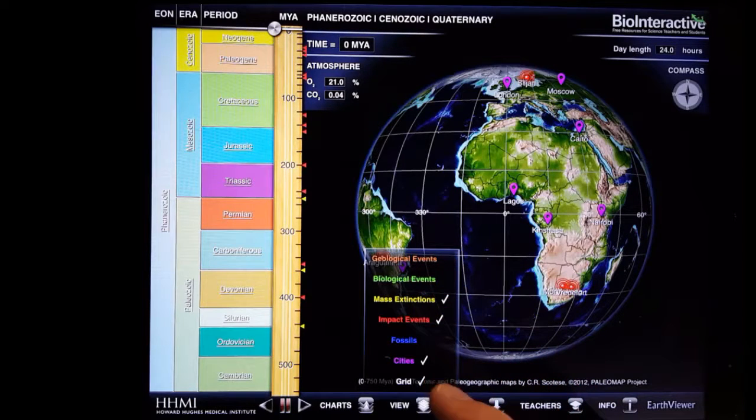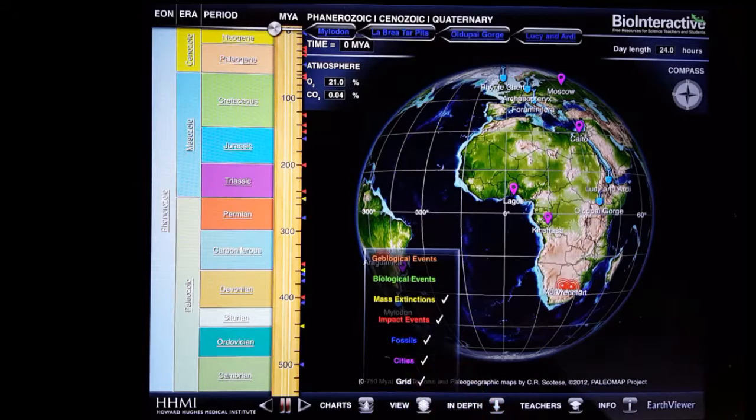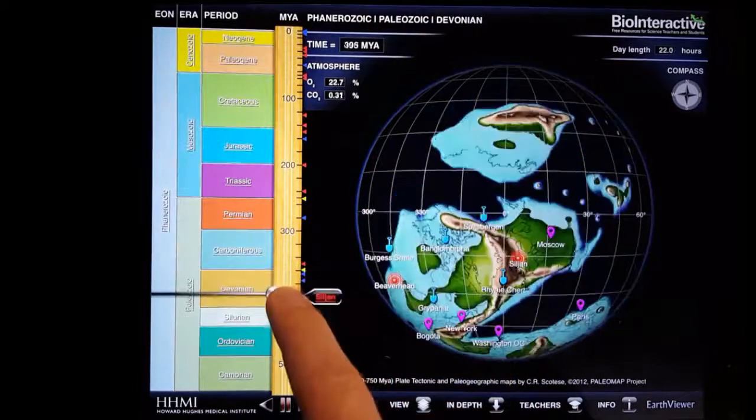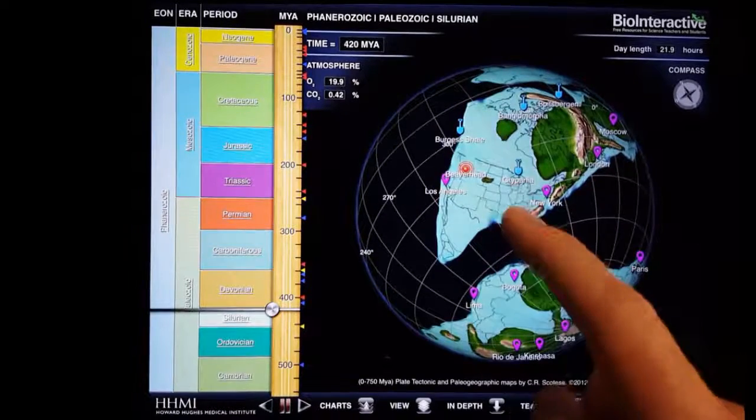as well as mass extinctions on the scale to the left. And we can select to see major fossil discovery locations, as well as cities, on the map of the Earth. You'll continue to see these, no matter what time period you're looking at, so you can get a better idea of what the Earth looked like at different times.